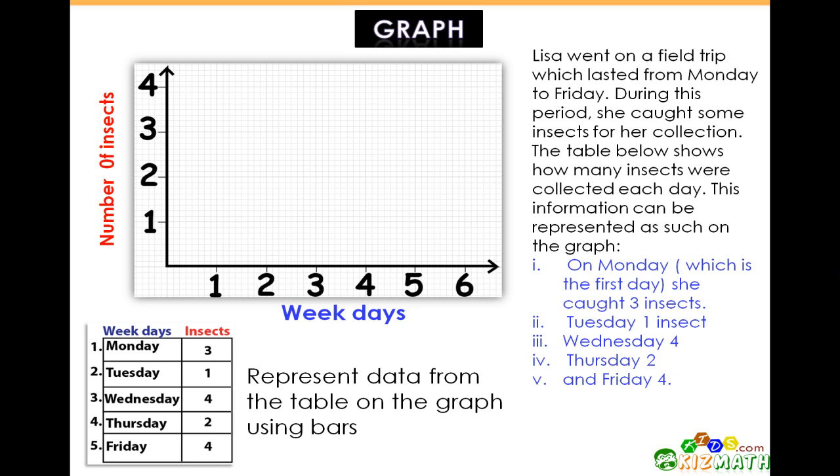On Monday, which is day one, she caught three insects. On Tuesday or day two, she caught one insect. On Wednesday or day three, she caught four insects. On Thursday or day four, she caught two insects.